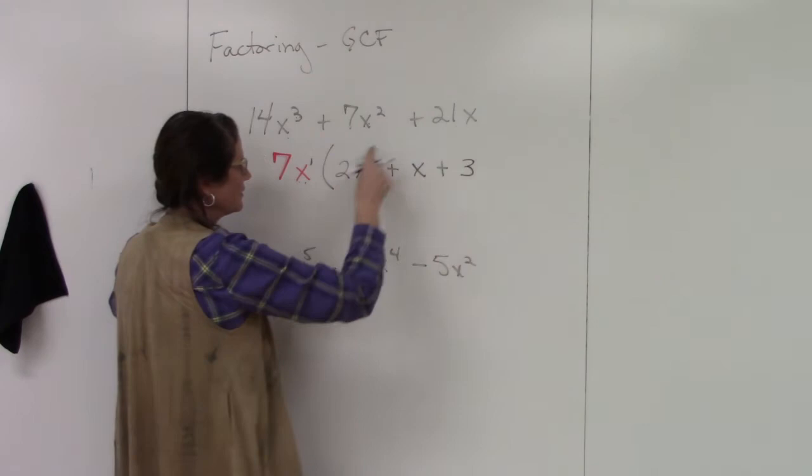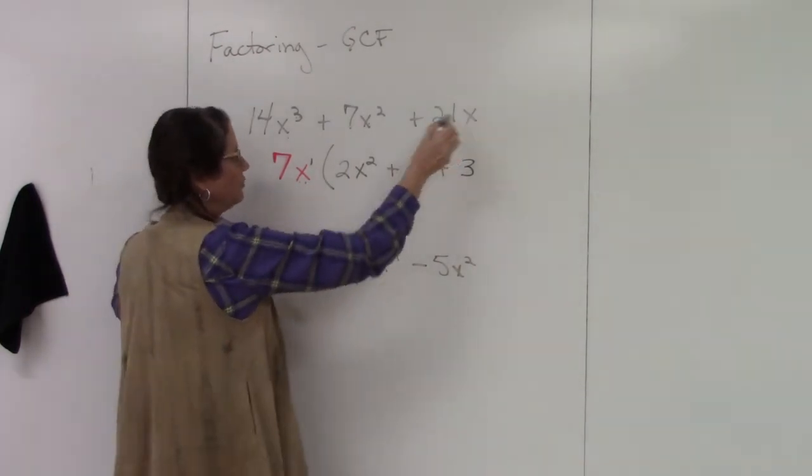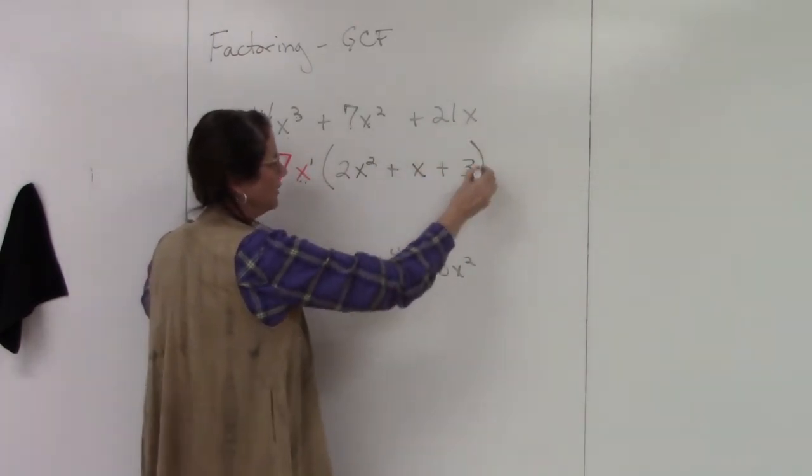So x divided by x is 1. So it cancels. So anytime you divide out the exact same variable, it cancels to 1. And I'm done.